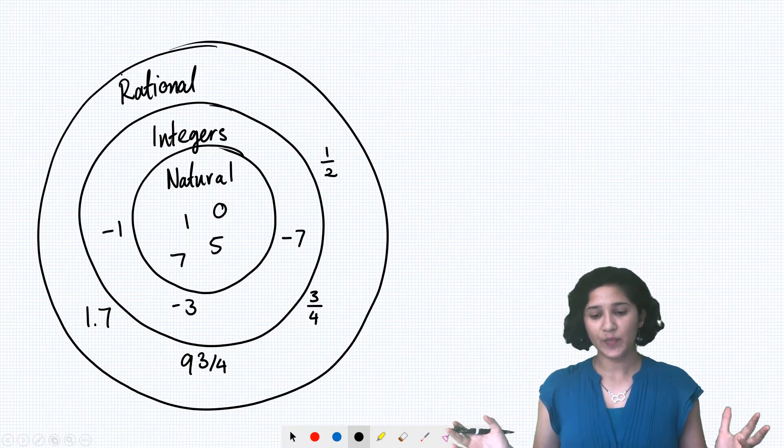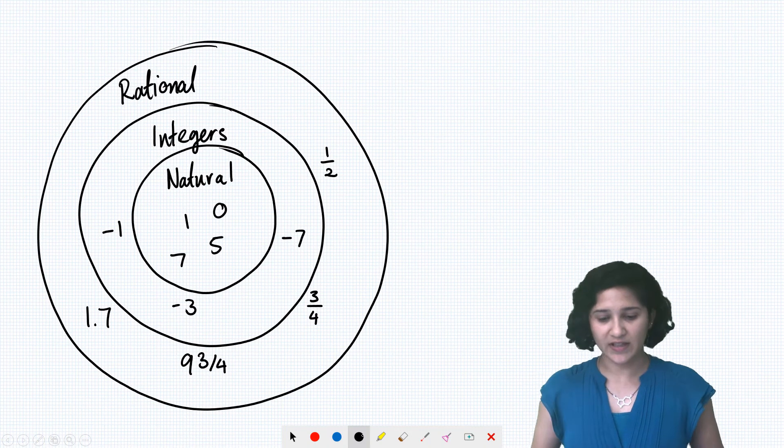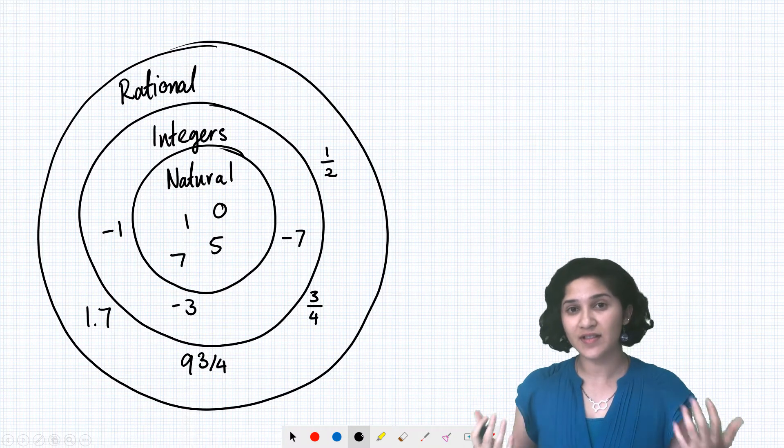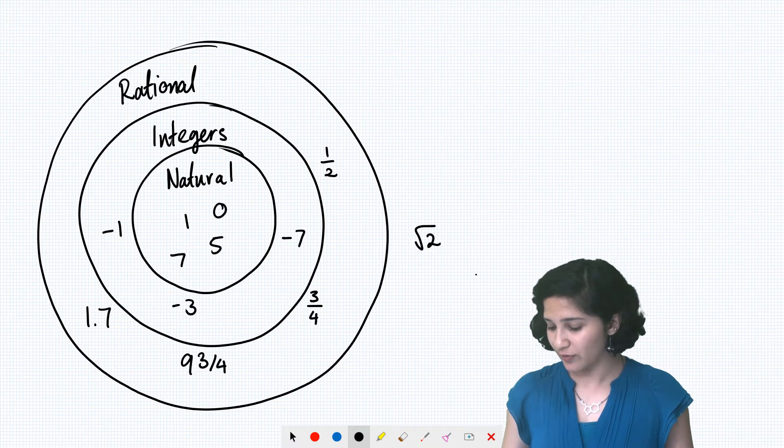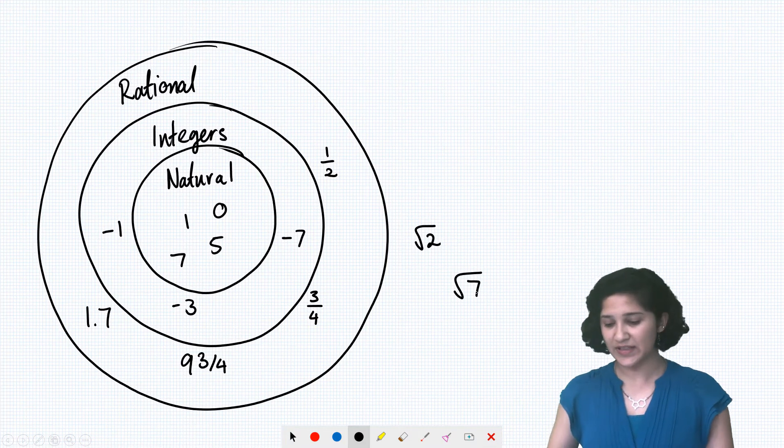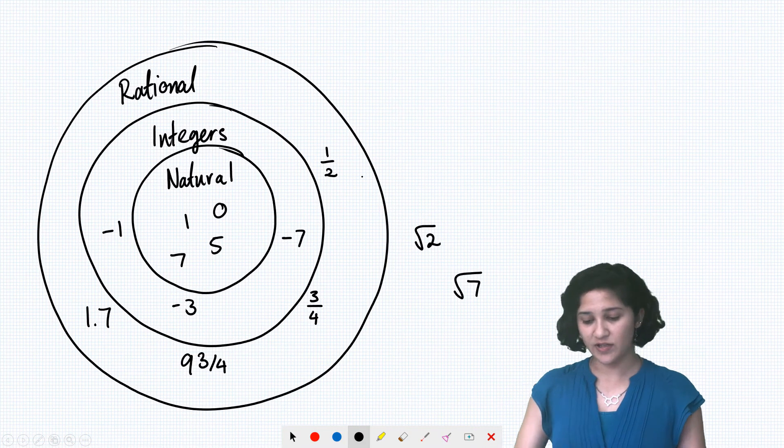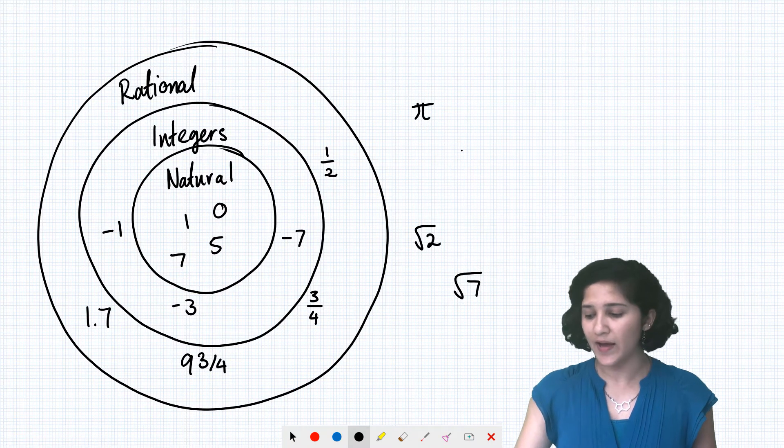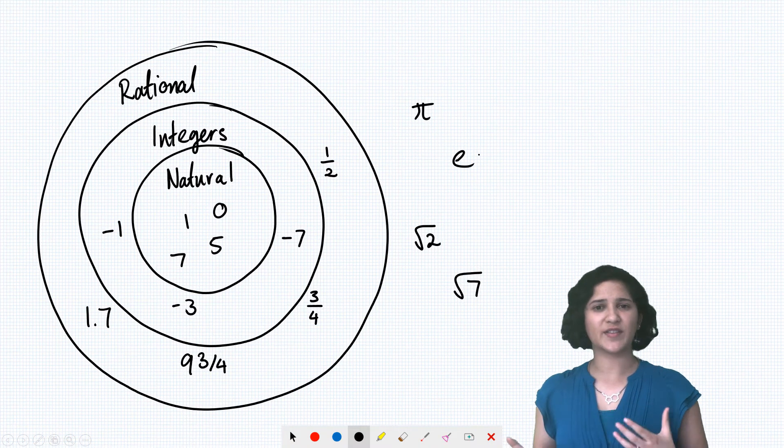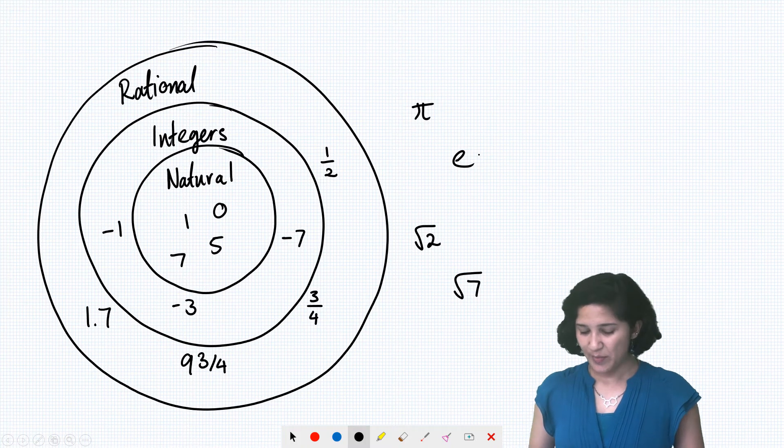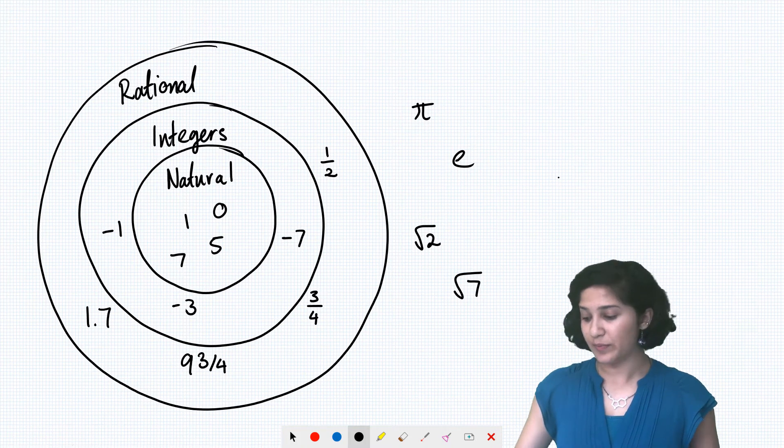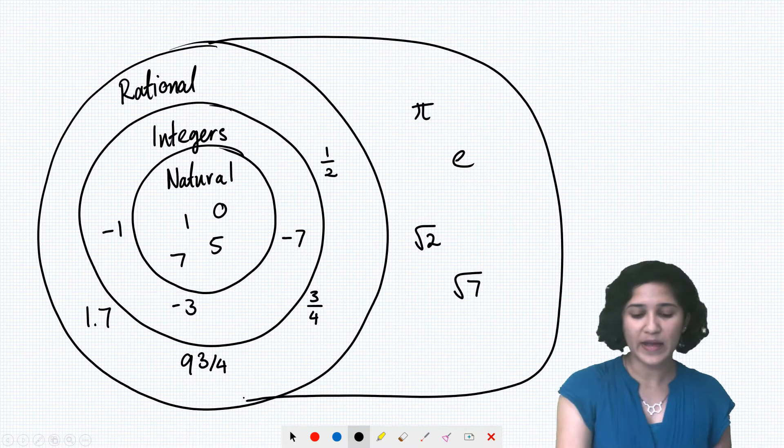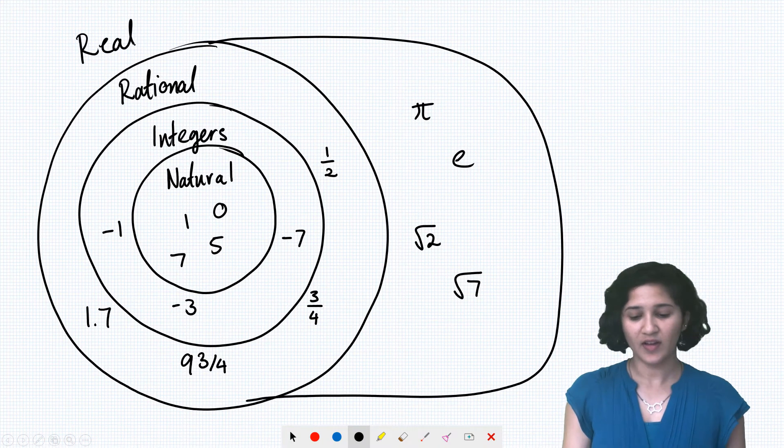And finally, we learnt that there was also some numbers that don't quite fit into the rational numbers. So when you learnt Pythagoras' theorem, you would have learnt about surds. So square root 2, square root 7, those kinds of numbers. So those ones don't fit into rational. And then we also have these numbers that are just special numbers like pi or e. So they all kind of sit outside our set of rational numbers. But all together, the rational numbers and all these extra ones make up the set of real numbers.